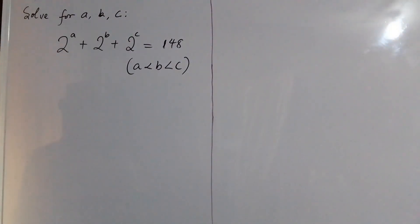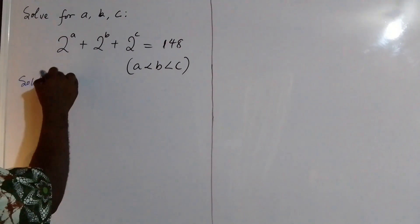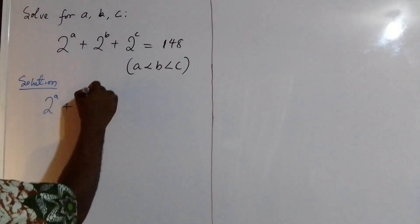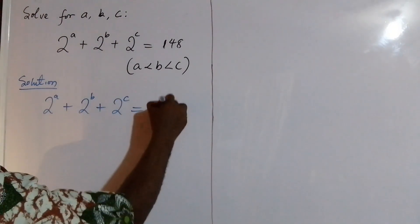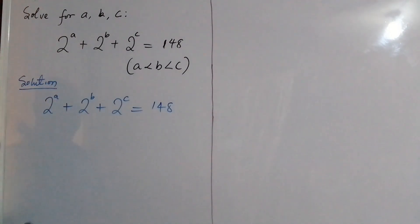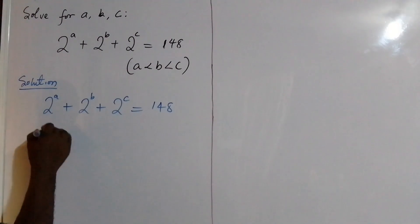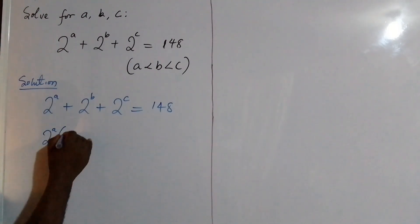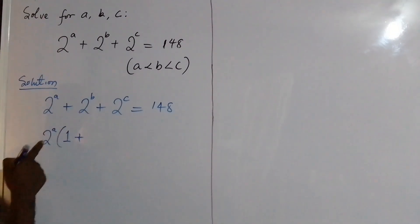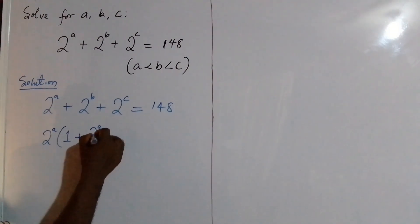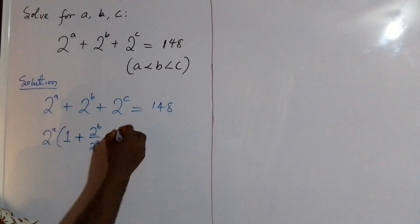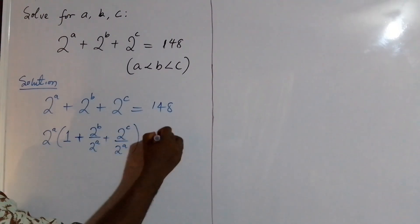So first, let's take our equation: 2 to the power of A plus 2 to the power of B plus 2 to the power of C equals 148, with the condition that A is less than B and B is less than C. What we are going to do is factor out 2 to the power of A from the left-hand side, giving us 2^A times (1 plus 2^B divided by 2^A plus 2^C divided by 2^A) equals 148.